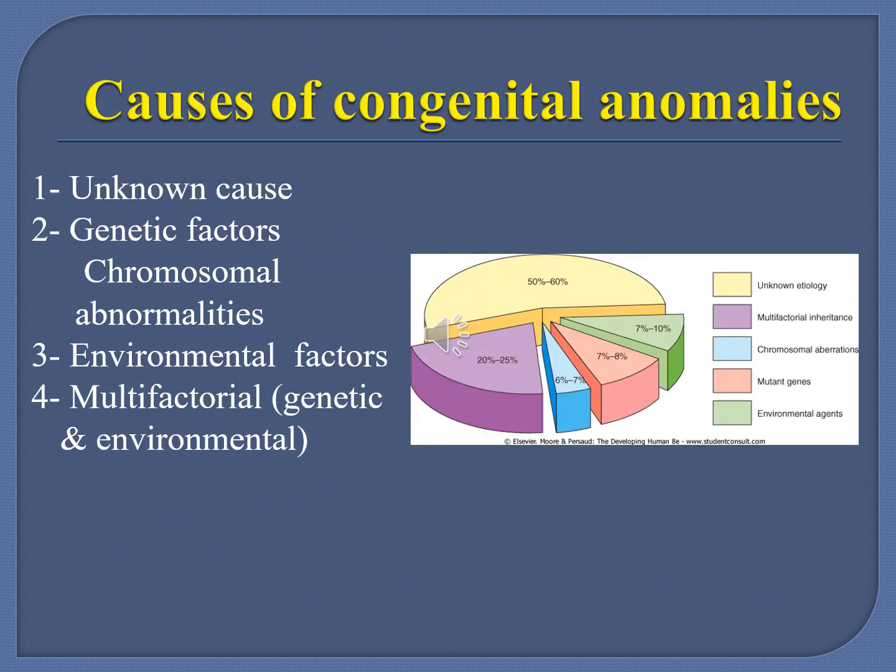The causes of congenital anomalies: around 50 to 60% have unknown etiology. Genetic factors include chromosomal aberrations and mutant genes. Environmental factors account for around 7 to 10%, and multifactorial causes — both genetic and environmental together — account for around 20 to 25%.